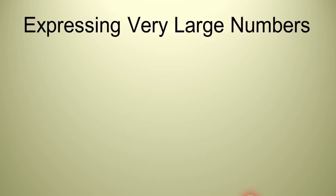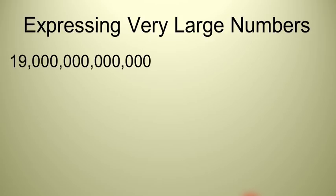Let's say we have a very large number — for example, this number right here. It looks like we have a one and a nine followed by twelve zeros. It might be hard to read that number. If you're in the United States, we would probably read that as 19 trillion; in another country, you might read that as 19 billion. Either way, it's a very large number. So, how do we express that in scientific notation?